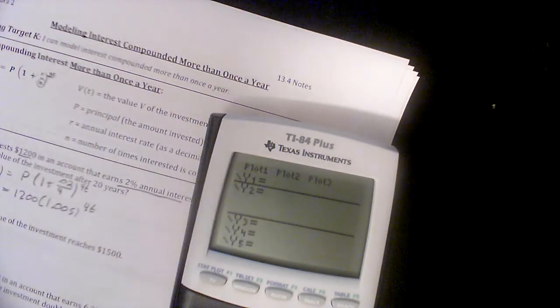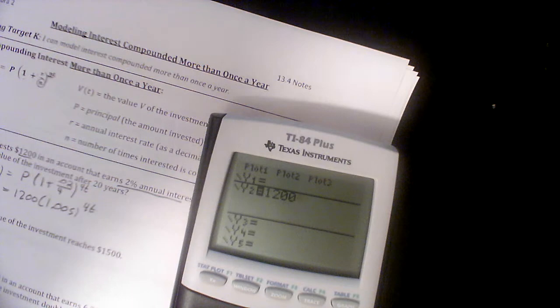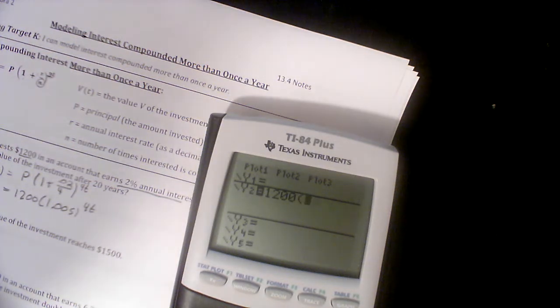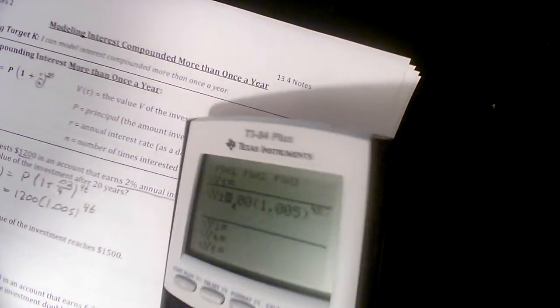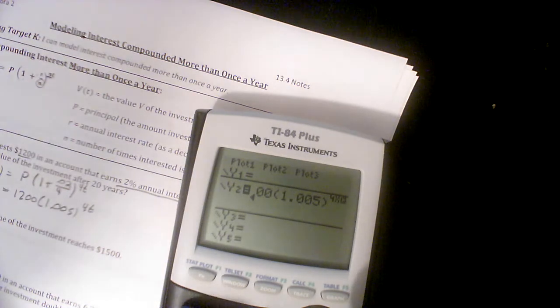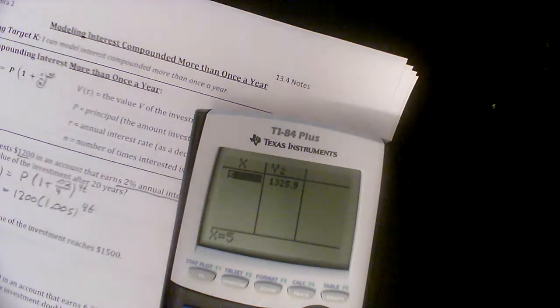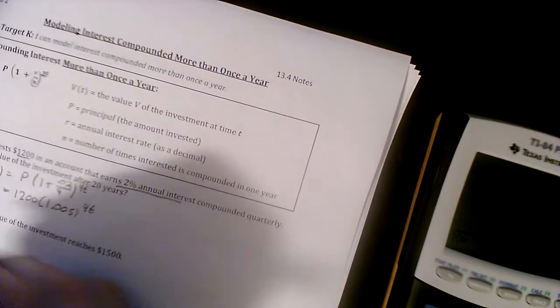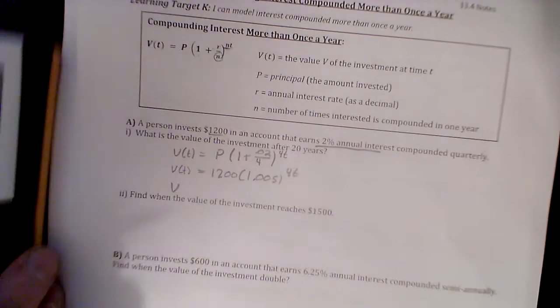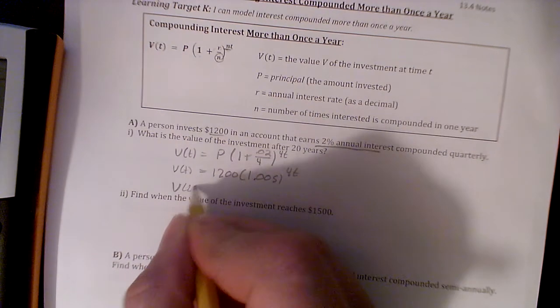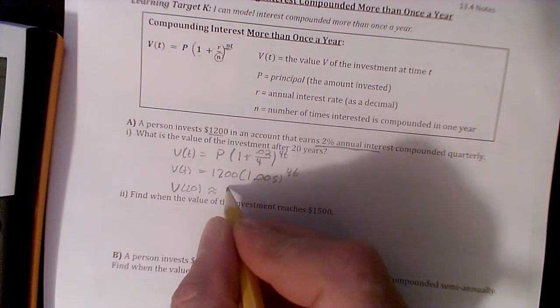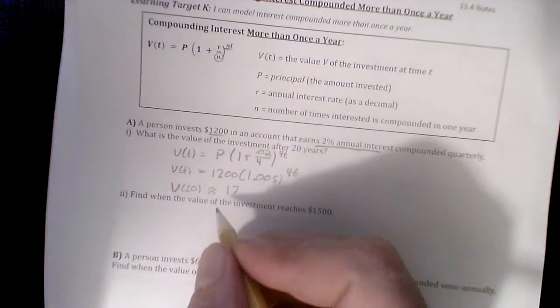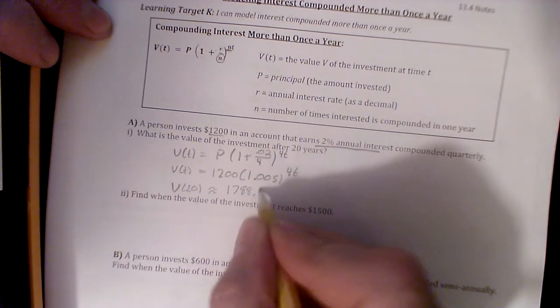Alright, I'm gonna plug that in here. I say 1200 times 1.0005 raised to the 4x power. There it is. We can go to our table and plug in 20 years and it looks like we have $1788. So V(20) is roughly, maybe even exactly, $1788.40.